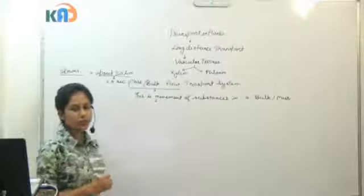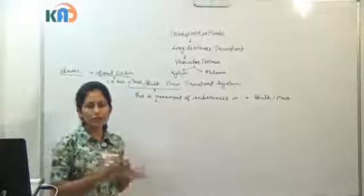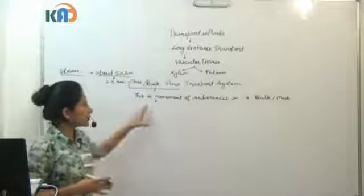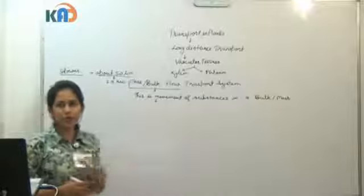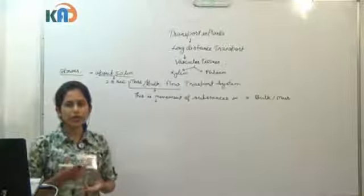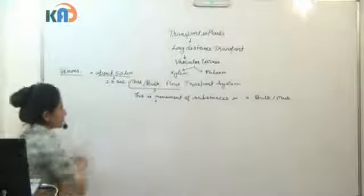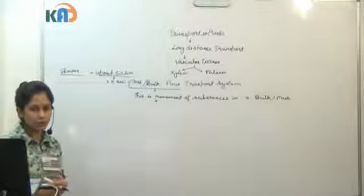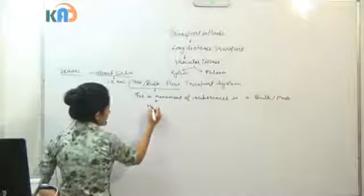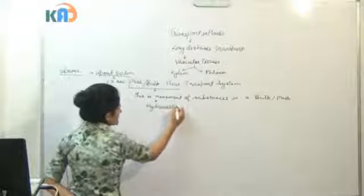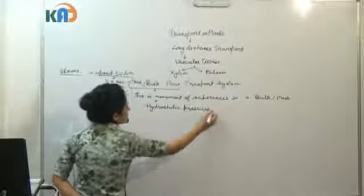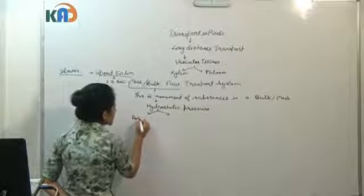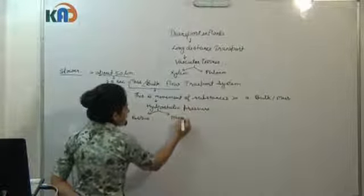This transport requires some driving force. In diffusion, transport depended on concentration gradient — from high to low concentration. Similarly, bulk or mass flow transport requires pressure, and this pressure is called hydrostatic pressure. Hydrostatic pressure is of two types: one is positive hydrostatic pressure and another is negative hydrostatic pressure.